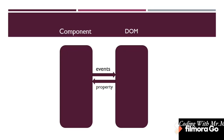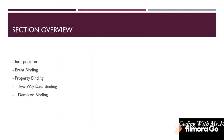There are different ways to do data binding. We can use events or properties. In this section we will discuss interpolation and how to display data to the user, how to do event binding using different events and binding them to component properties, how to use property binding to bind data to DOM elements, and how to use ng model for two-way data binding. Finally, we'll do a demo on data binding and create an Angular project.